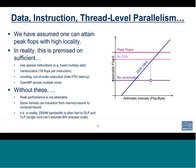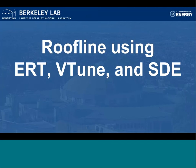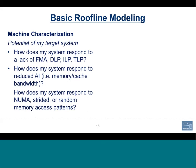At this point, let's switch and show how we actually collect roofline data using the Empirical Roofline Toolkit, VTune, and SDE. In basic roofline modeling there are two main inputs: machine characterization — how does the system respond to lack of FMA, DLP, TLP, and how does it respond to reduced arithmetic intensity as locality is lost? And application monitoring — what are the actual properties of the application's execution, including the real arithmetic intensity as measured on the target machine and how well the app vectorizes.